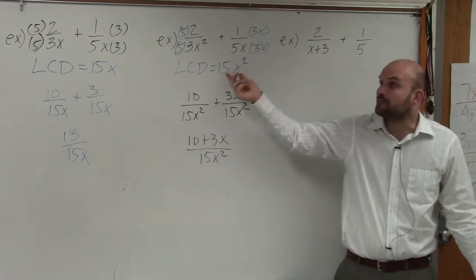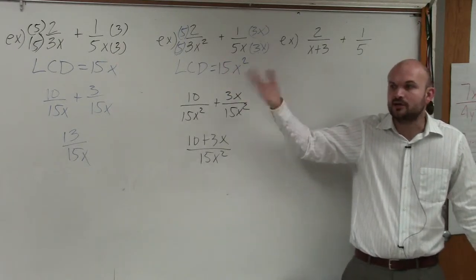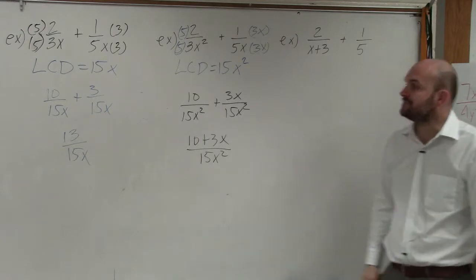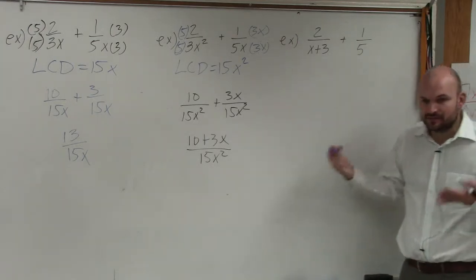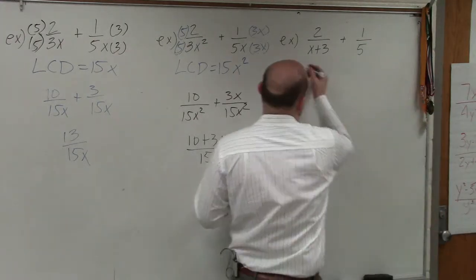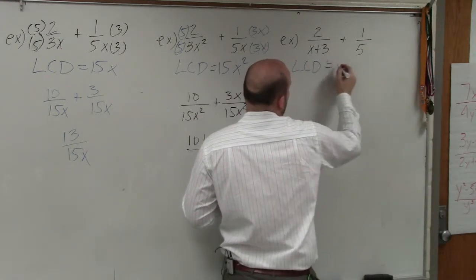However, if you multiply the product 15x³, that still is a common denominator. You could still do that. You'd just have to simplify it at the end. So here, when you start dealing with expressions, the LCD is basically just going to be the product of our denominators.